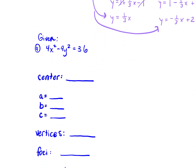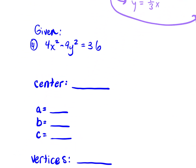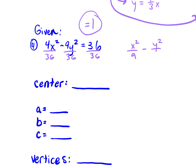Let's take a look at number 4. Before we do anything, we want to put this in standard form. Standard form has to equal 1, so we divide everything by 36 and simplify. 4 goes into 36 nine times, so we get x squared over 9. 9 goes into 36 four times, so minus y squared over 4. And 36 over 36 is 1.